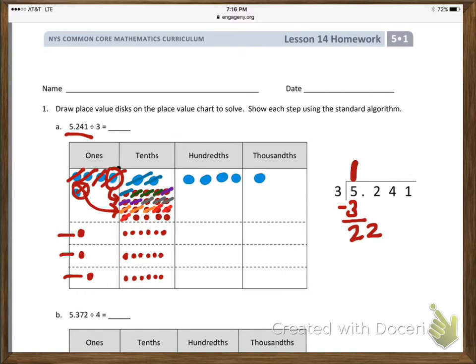I think we can fit one more set of 3 in. When we look at the standard algorithm, we know that 3 goes into 22 seven times, and that's what's represented on our place value chart here. Each of these groups has 7 tenths in them, and the 7 in our standard algorithm is in the tenths place.